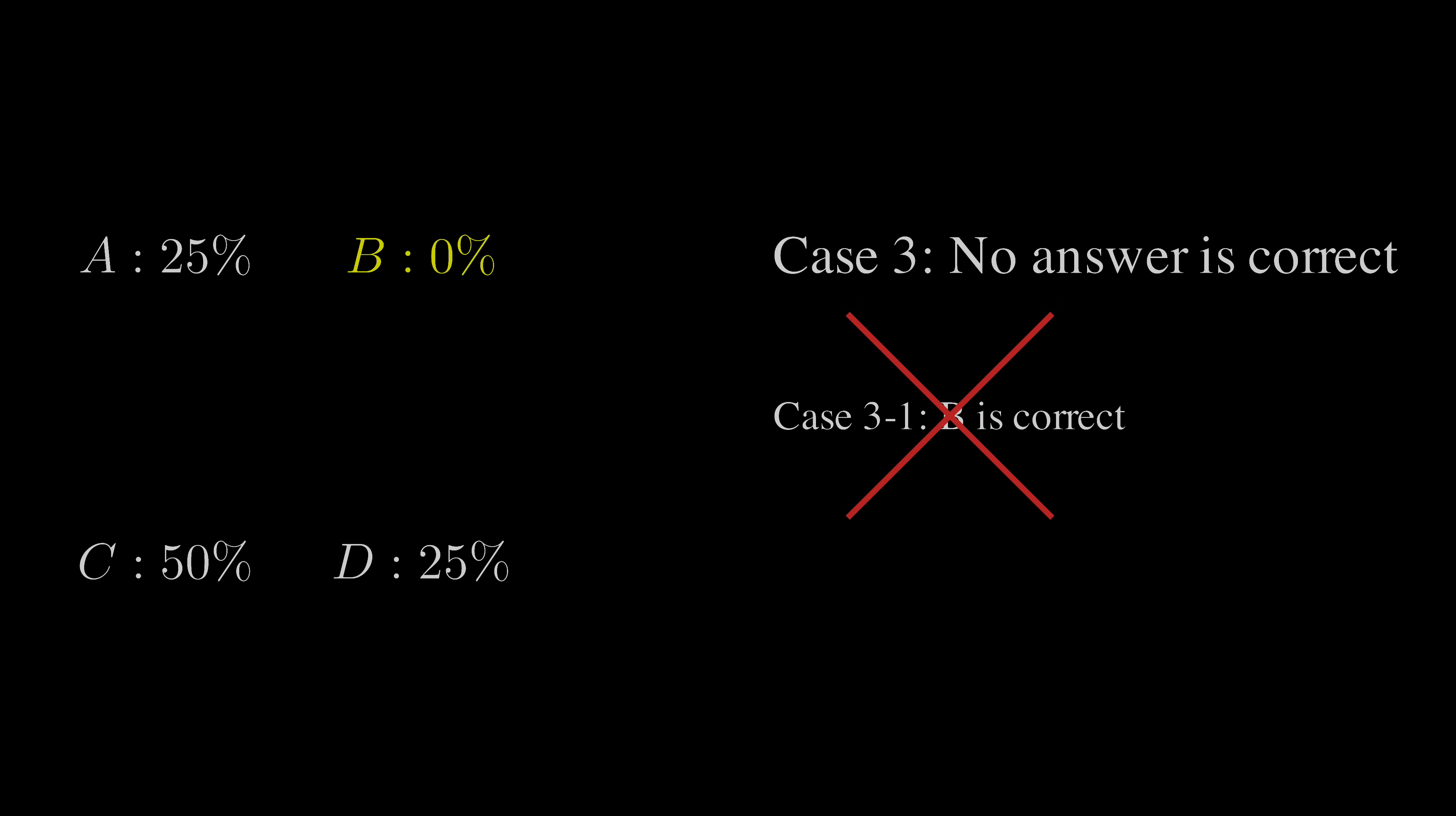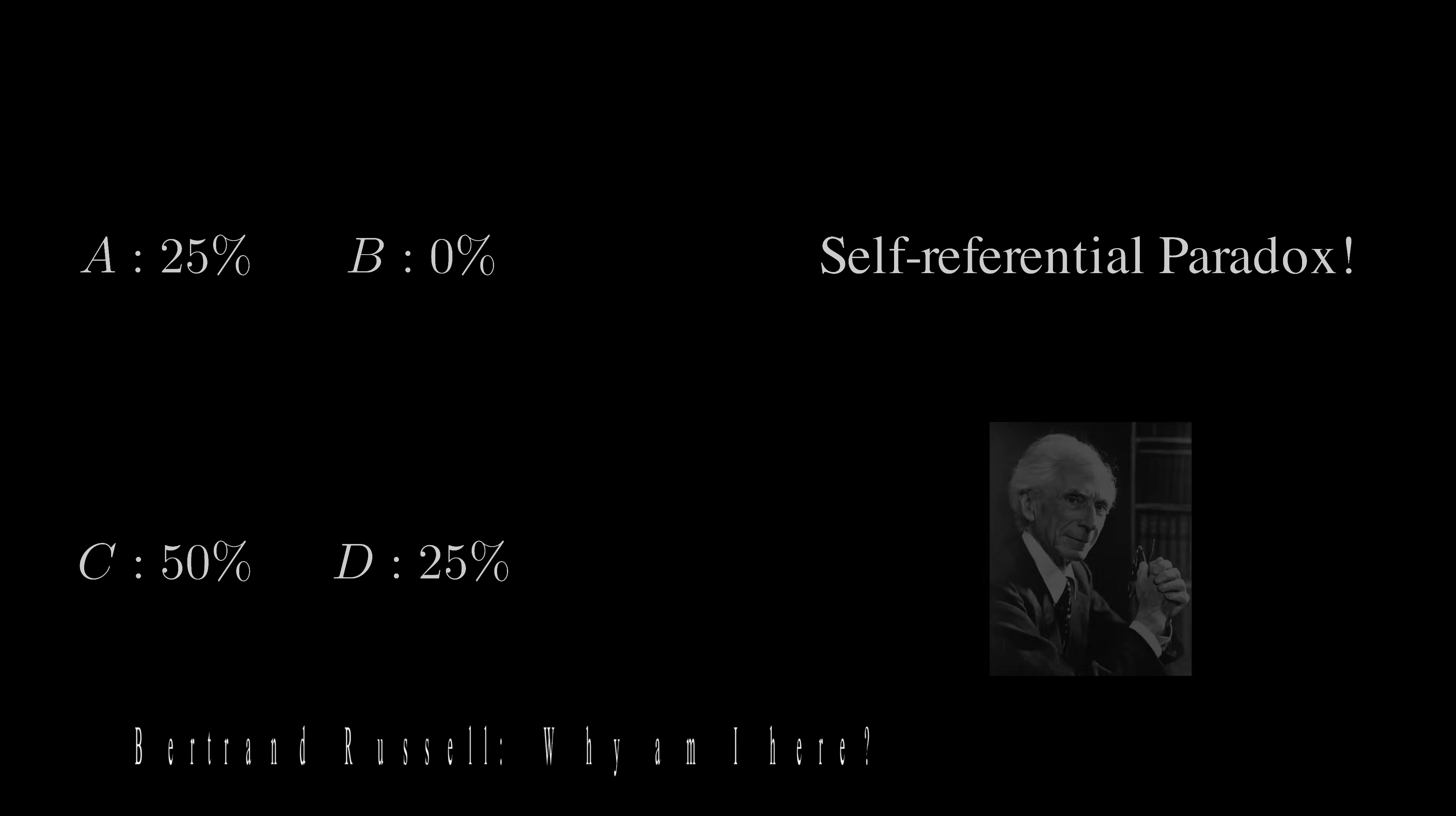In summary, the question is a classic self-referential paradox. In this question, no matter which one you choose, which two you choose, or if you refuse to choose, you cannot be self-consistent.